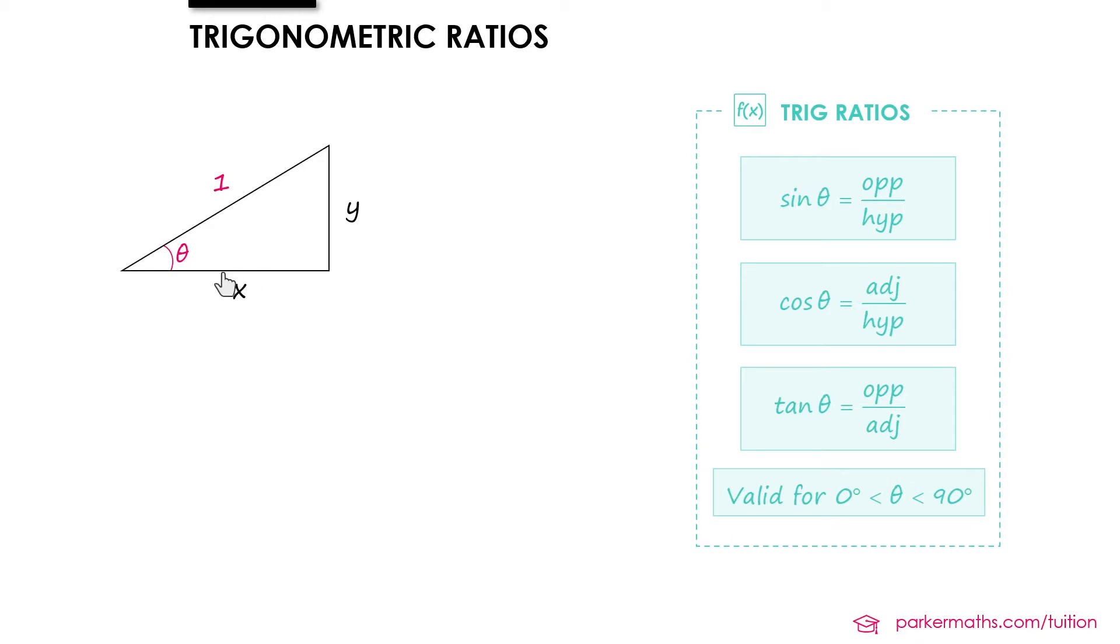To find X we're using the adjacent side and the hypotenuse. So we can say that cos θ is adjacent over hypotenuse, X over 1, which means that X equals cos θ.